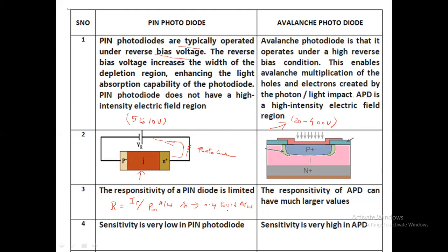In the avalanche photodiode, the responsivity for silicon is in the range of 80 to 130 amperes per watt. The responsivity of the avalanche photodiode is very large. The reason for this is it has a very large internal gain due to the avalanche multiplication effect. Avalanche multiplication means the electron-hole pairs get multiplied in a huge range. Because of that, large amounts of current flow out and the responsivity of the circuit is also very high. So, the response of the avalanche photodiode is larger when compared to the PIN photodiode.